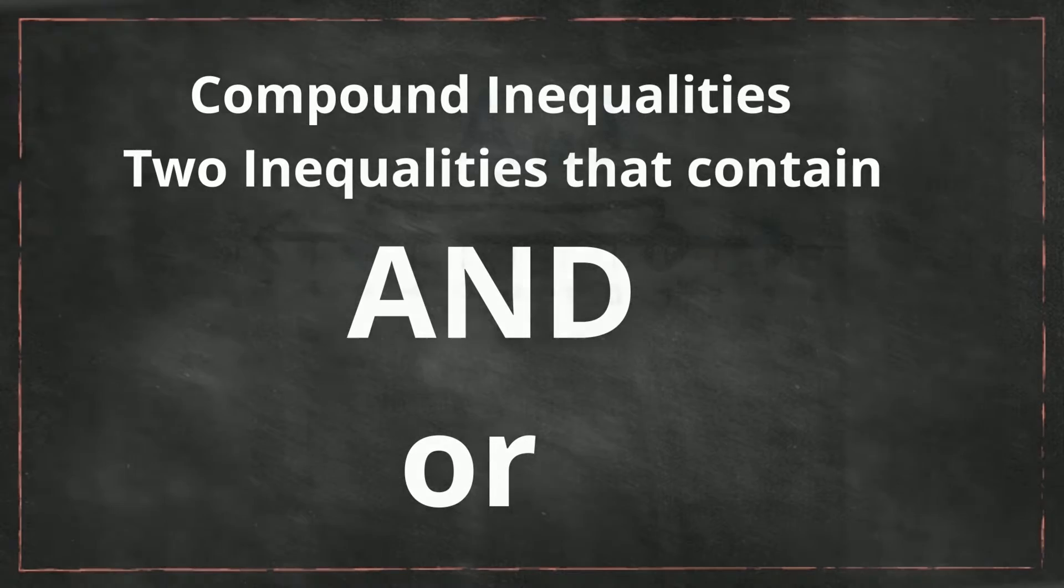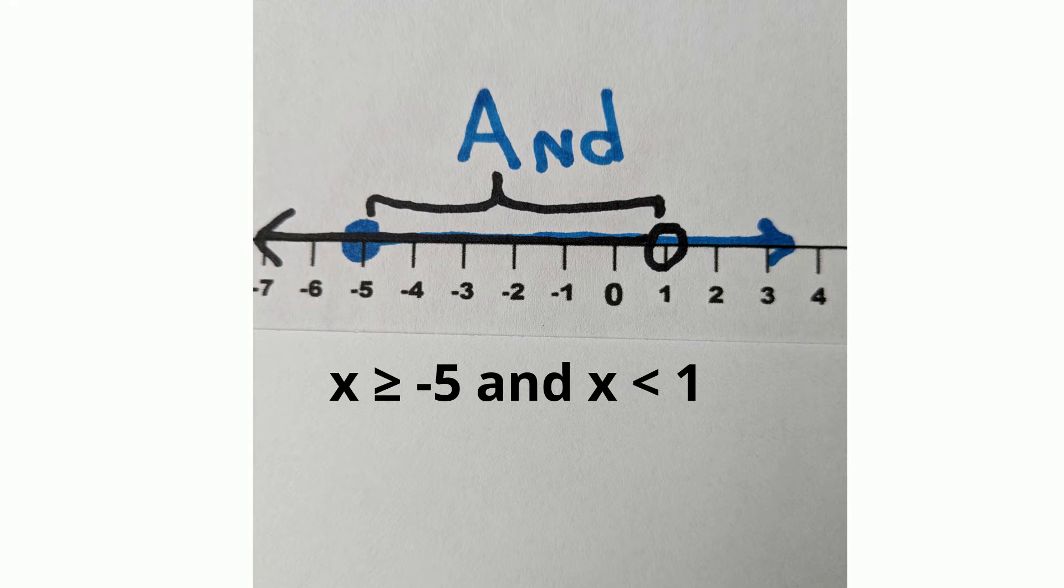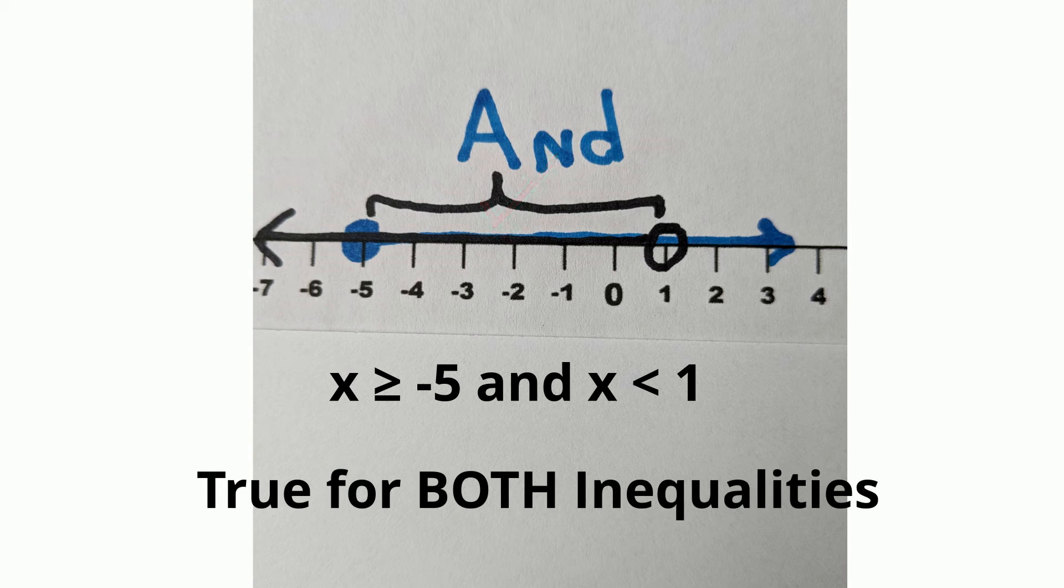In a compound inequality, the word AND refers to the point where the inequalities intersect. So the final solution must be true for both inequalities. And here is what one would look like.